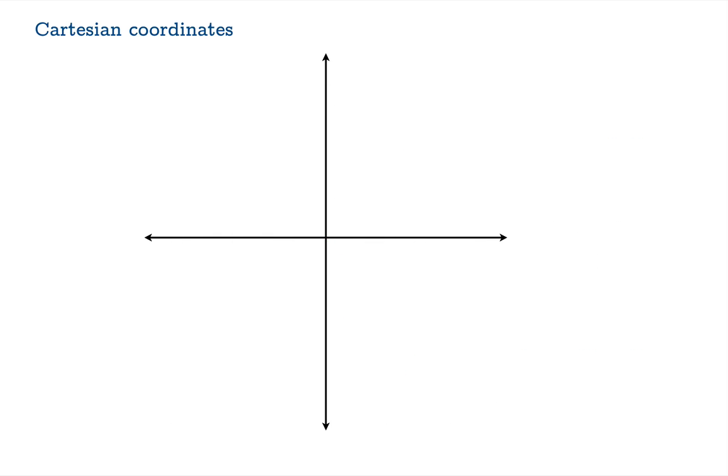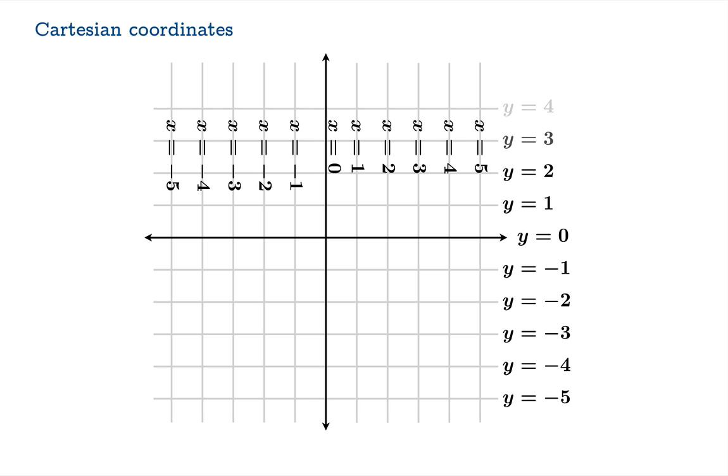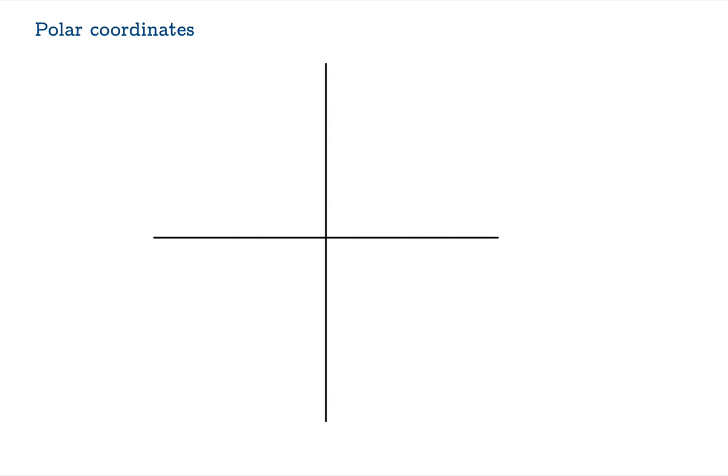Using Cartesian coordinates is very easy to describe vertical and horizontal lines. They're simply the set of points for which one of the coordinates is constant. But you could imagine using different information to describe where you are in the plane.